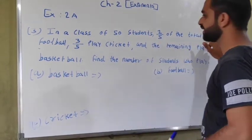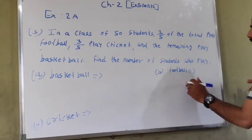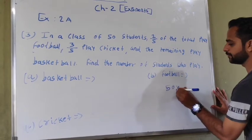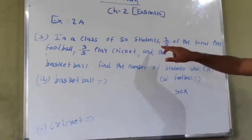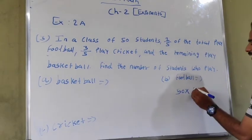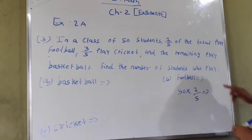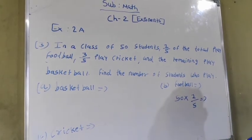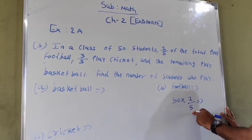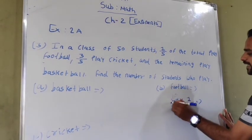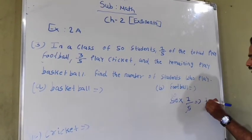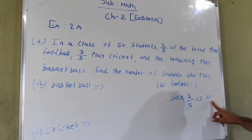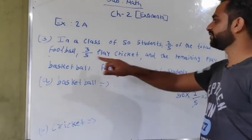In a class of 50 students, 1 upon 5 students play football. So 50 multiplied by 1 upon 5. 50 and 5 both simplify, so we get 10 students play football.